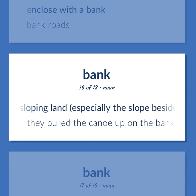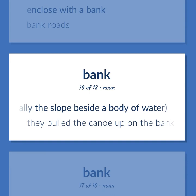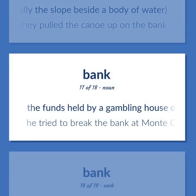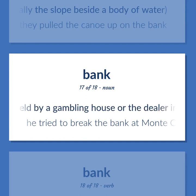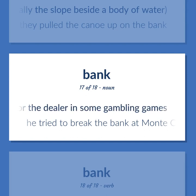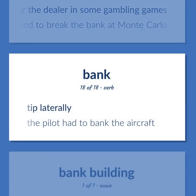Bank: Sloping land, especially the slope beside a body of water — 'They pulled the canoe up on the bank.' The funds held by a gambling house or the dealer in some gambling games — 'He tried to break the bank at Monte Carlo.' Tip laterally — 'The pilot had to bank the aircraft.'